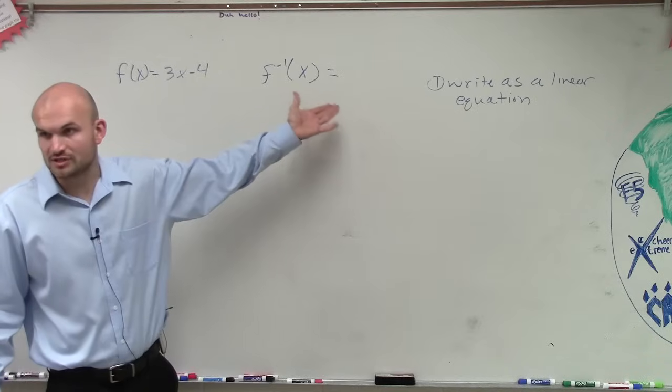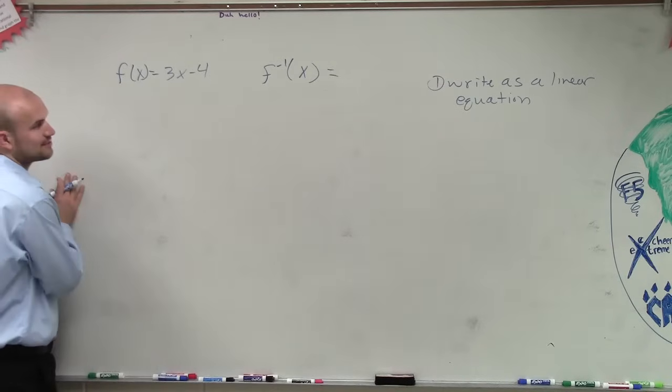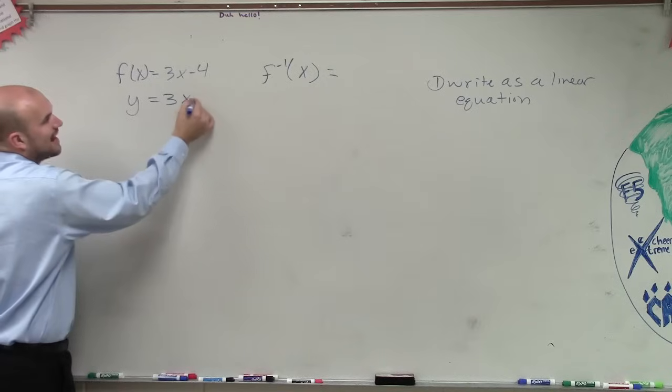So to find the inverse, you would have to write it into a linear equation. So the first thing we want to do, if I'm given f of x equals 3x minus 4, to write it as a linear equation, I'm just going to use x and y's.